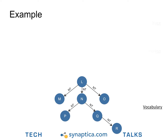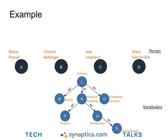We also have a hierarchical vocabulary of subject terms we wish to adopt to indicate what each individual is known for. Pascal, Babbage, Lovelace, and Somerville are all scientists, so we begin from the parent term 'science'. Underneath science we may have math, physical sciences, and computer science. Under physical sciences we have physics and astronomy, which in turn has astrophysics as a child term. Pascal is known for his work in fluid mechanics, and for simplicity we associate him with physics. Babbage is a well-known mathematician. Lovelace is known for early computer science. And Somerville, for the purposes of this example, astrophysics.